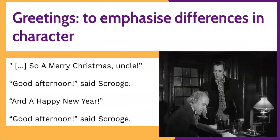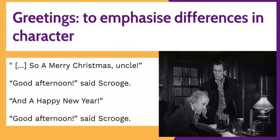In our next extract, Dickens' minor sentences are opposites and these are deliberately chosen to show the differences between Scrooge and Fred. 'A Merry Christmas, Uncle.' 'Good afternoon,' said Scrooge. 'And a Happy New Year.' 'Good afternoon,' said Scrooge. These minor sentences are greetings. Fred's minor sentences are warm and full of goodwill — he's a generous character thinking of Scrooge and wishing him well. In contrast, Scrooge's repetition of 'Good afternoon' is used to dismiss Fred; he wants him to leave. So Dickens' use of contrasting minor sentences heightens the differences between the two characters.